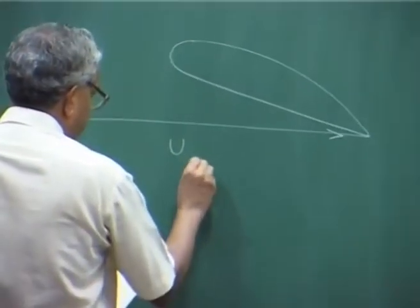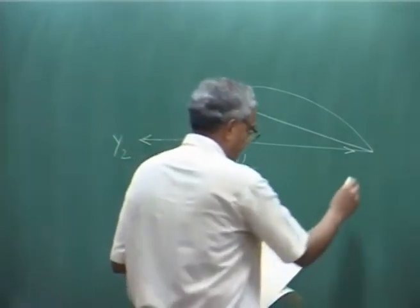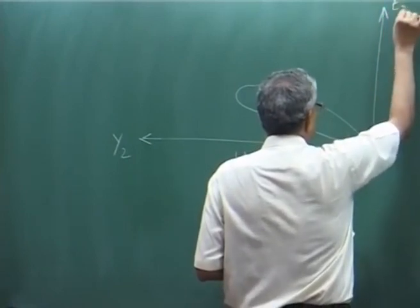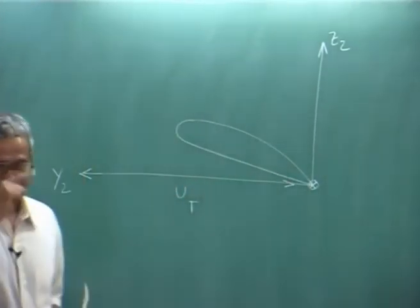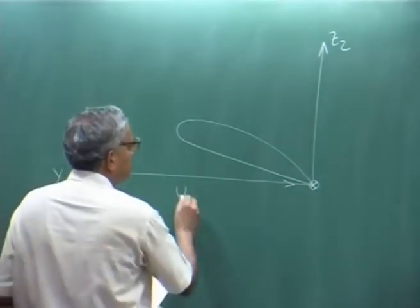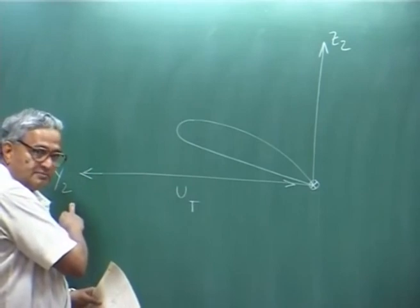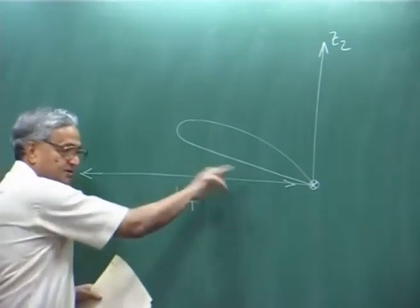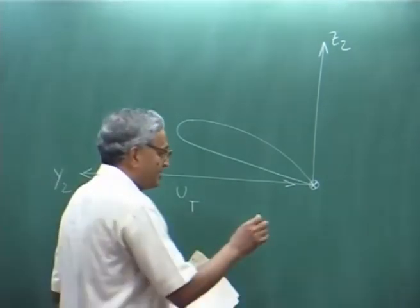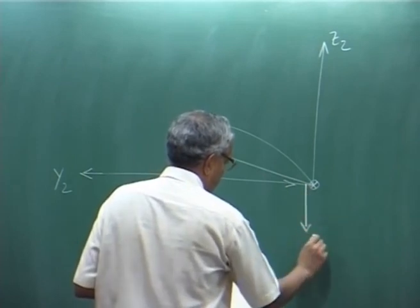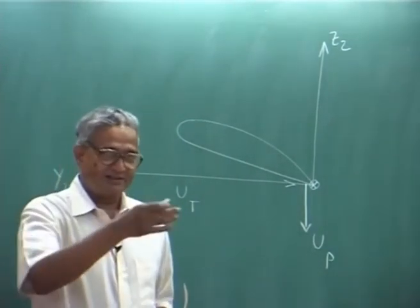Please note: this is your y2 axis, this is your z2 axis, x2 is going in. We had the velocity component u_t — that is the velocity along the y2 direction, but since it is coming towards it, a minus sign is there. That is why I put u_t this way, and then there is u_p, which is the perpendicular velocity along the z2 direction, which is again a negative quantity — that minus sign I have taken here.